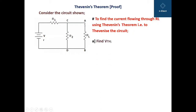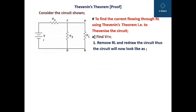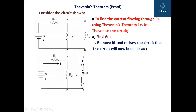The first step is to find VTH, the Thevenin's voltage. To do this, remove RL from the circuit and redraw it. The circuit will now look like this with RL removed.